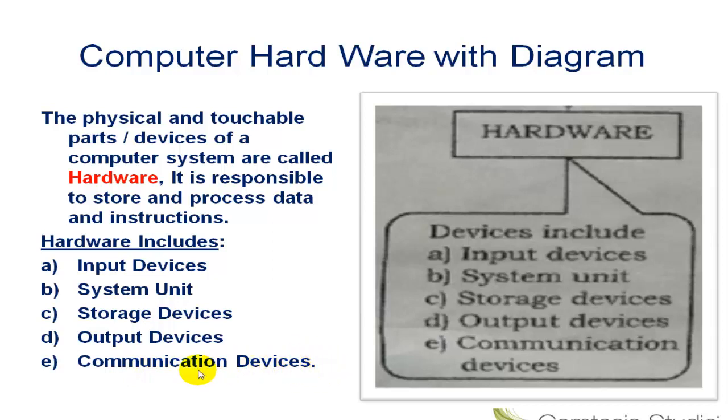Communication Devices. Communication device is a device that can send and receive information from one place to another. This transfer of information is called communication. Modem and telephone lines are communication devices.